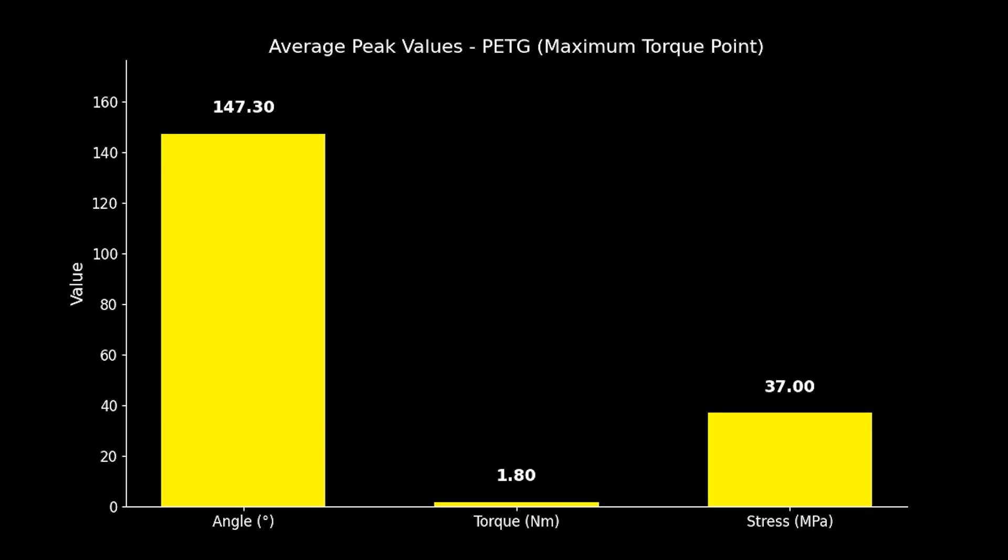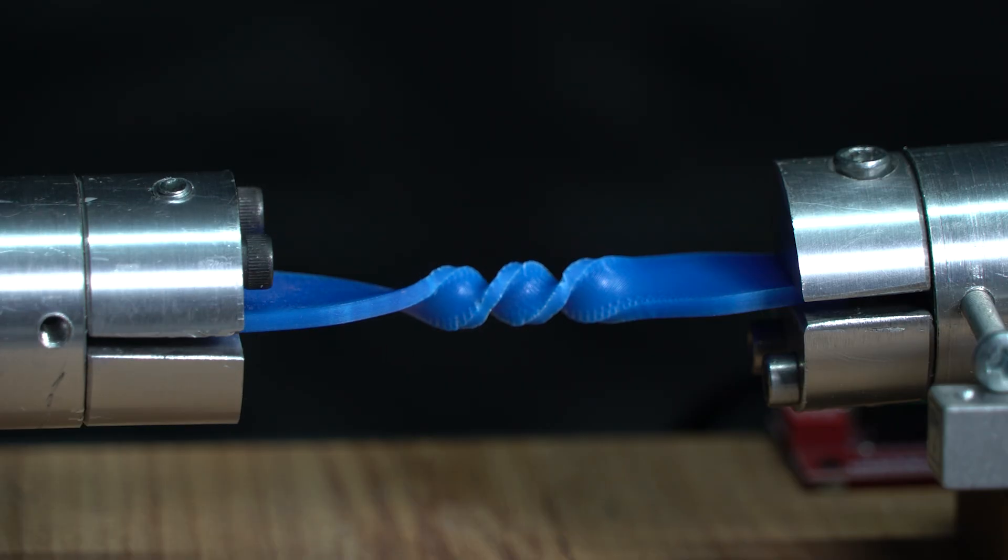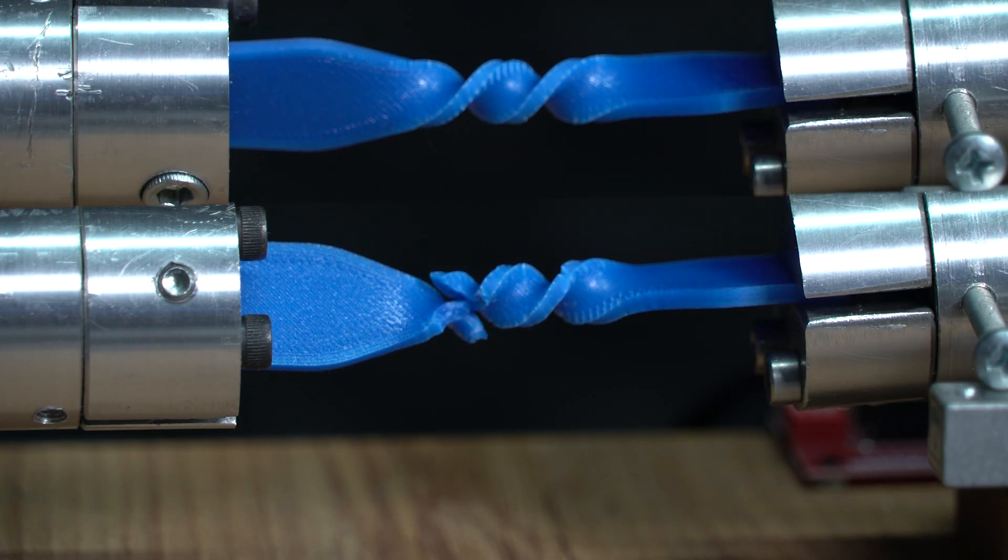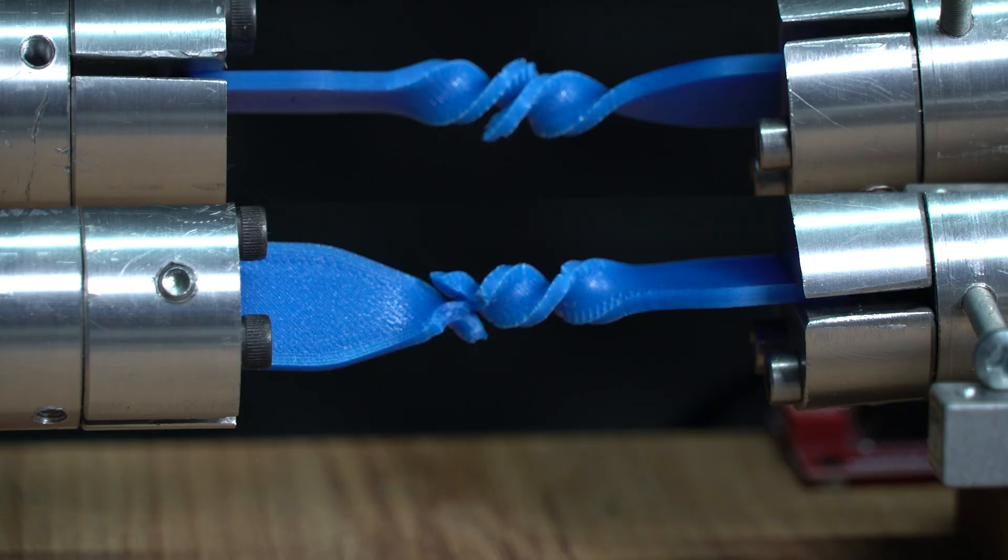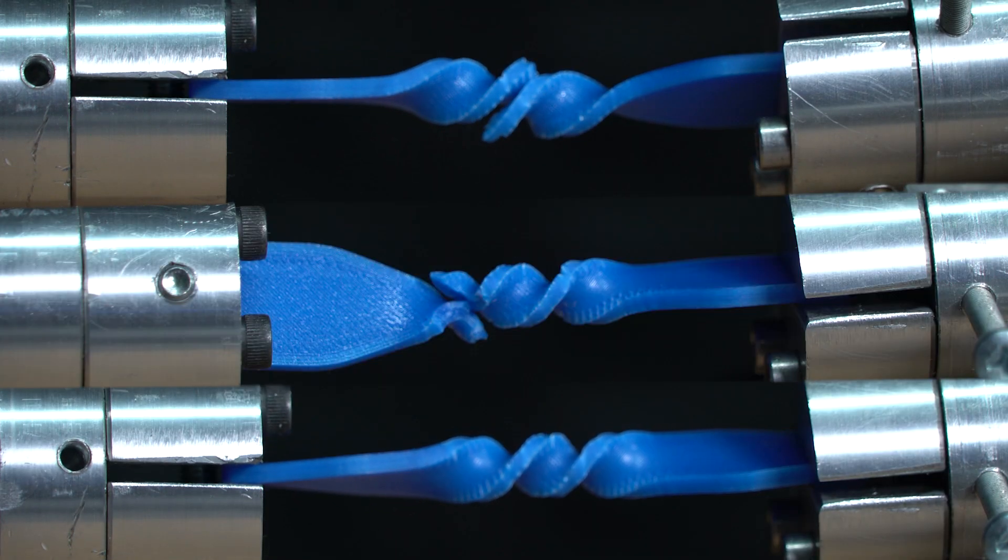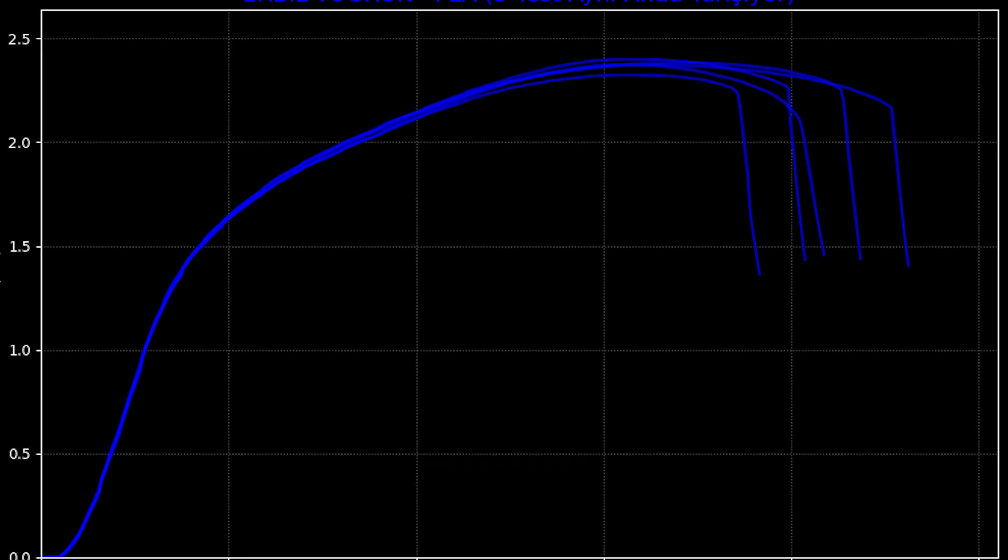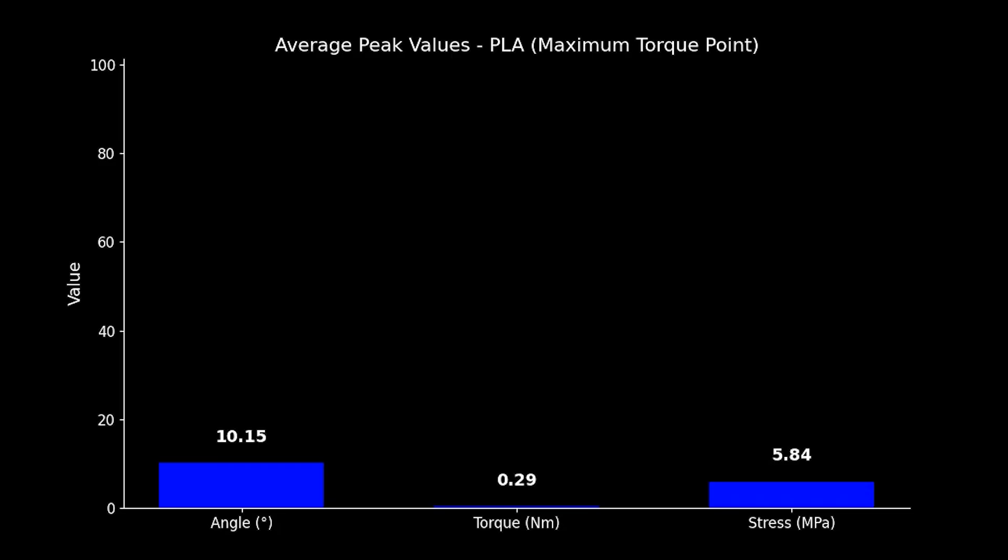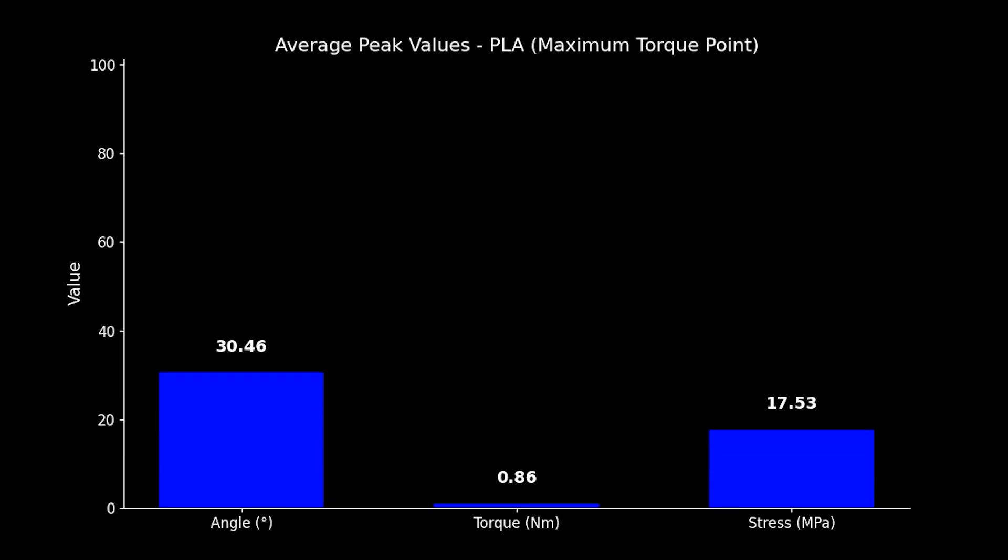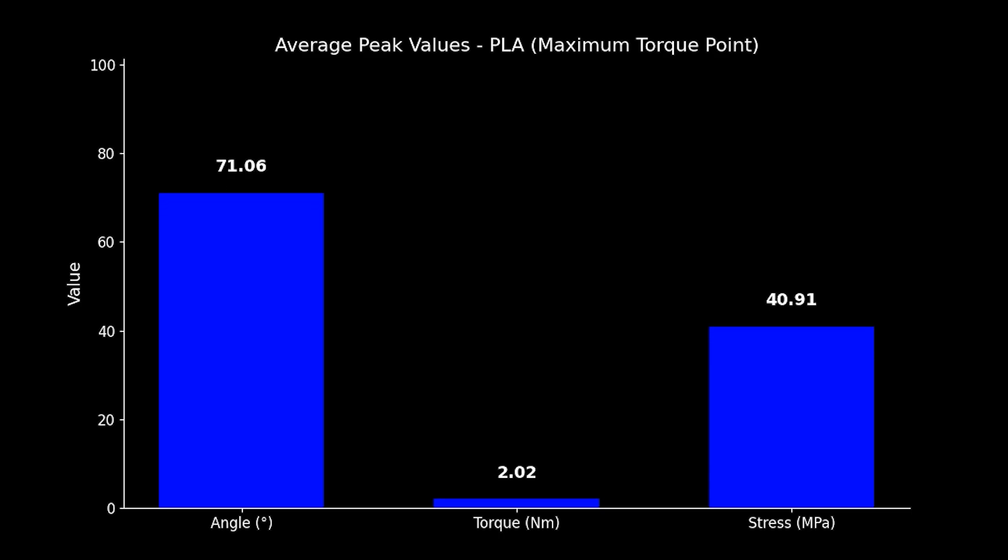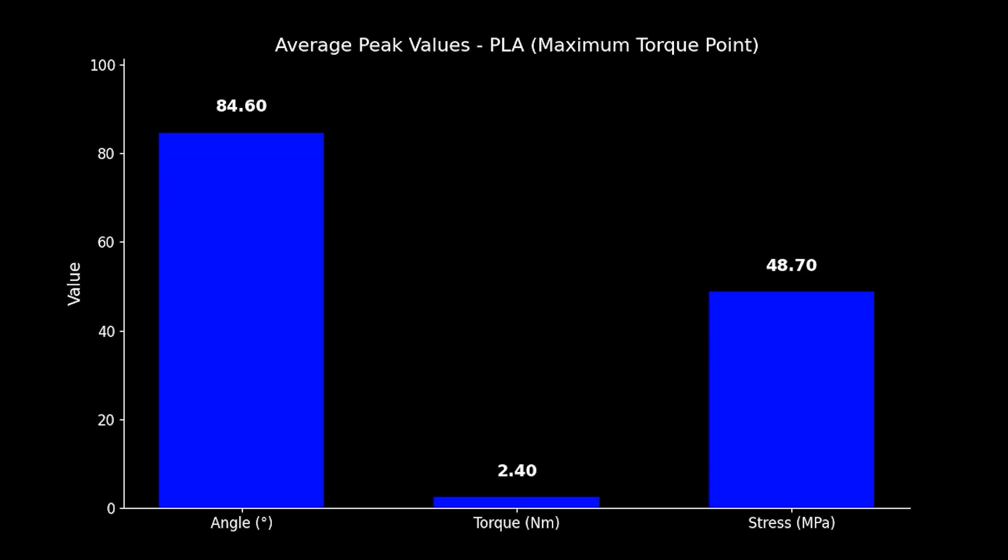And finally, PLA. Time for raw power. The results, PLA. Average angle, 84.6 degrees. Max stress, 48.7 megapascals. Max torque, 2.4 newton meters.